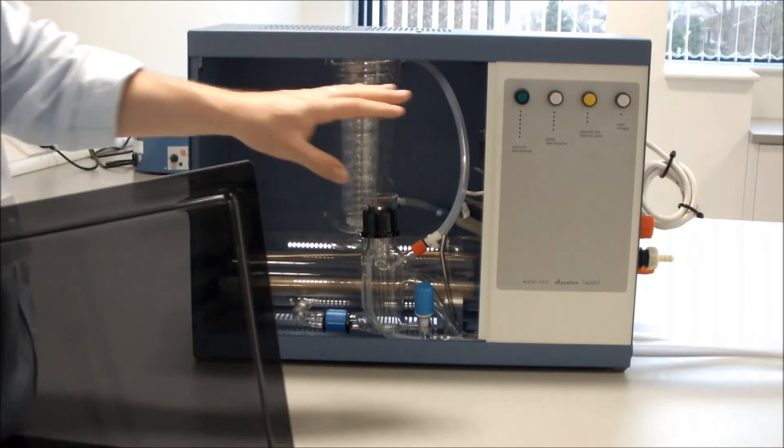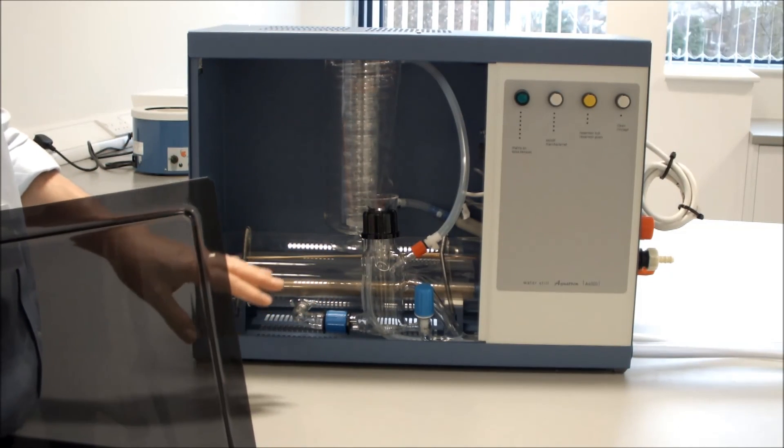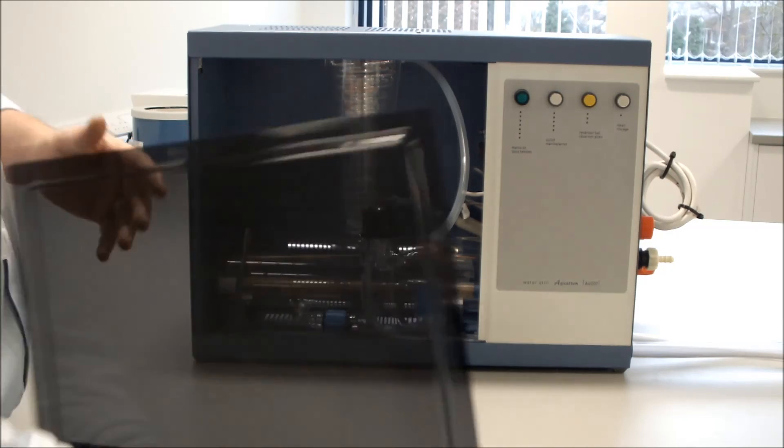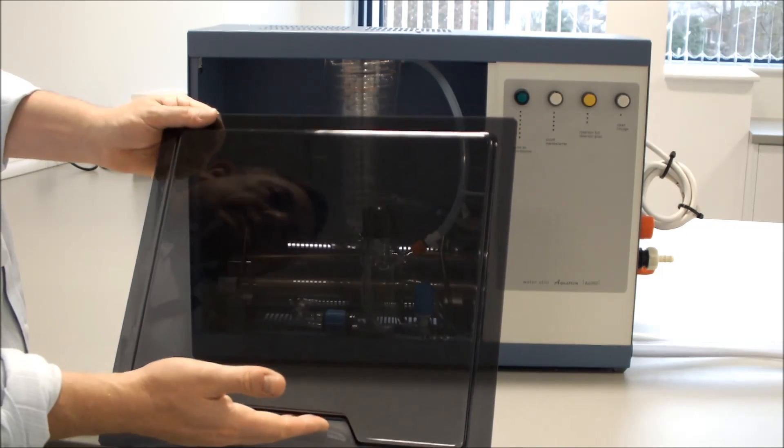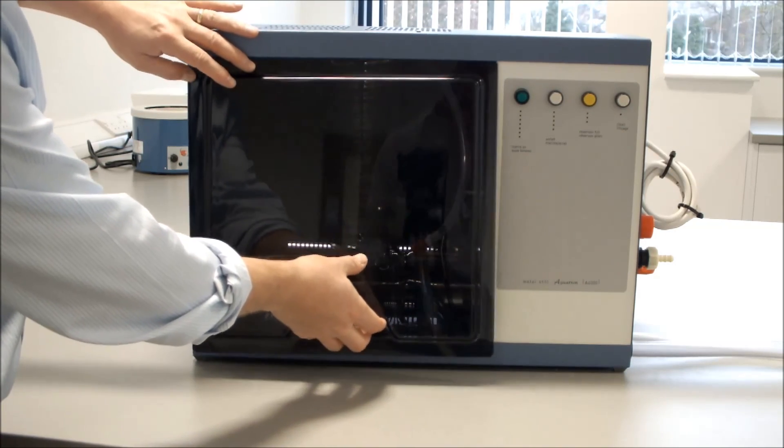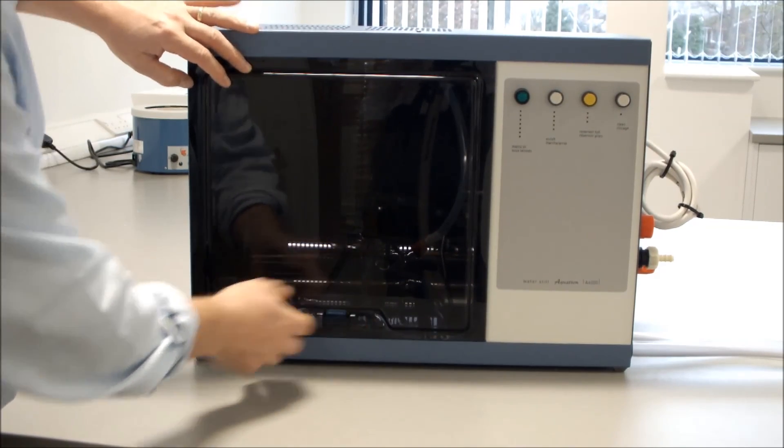The last thing to do is obviously get your Aquatron up and running. Make sure there's no leaks. Everything is working correctly. And the final thing is to put our Perspex fascia on. Again, that is just lift it up and drop down.